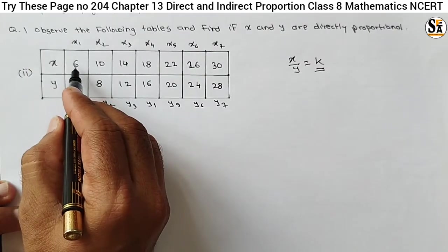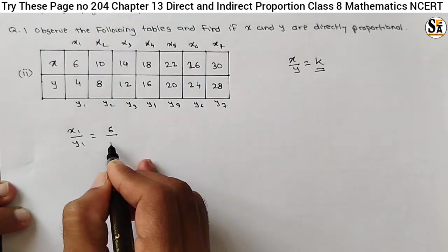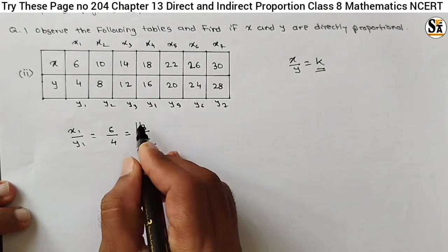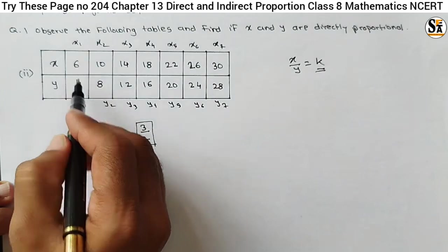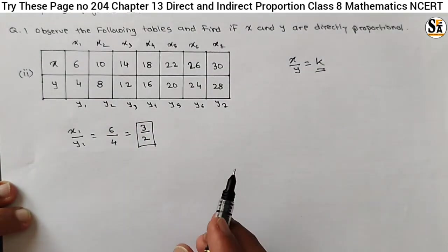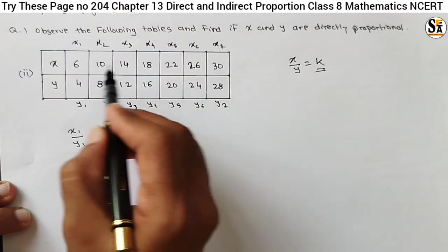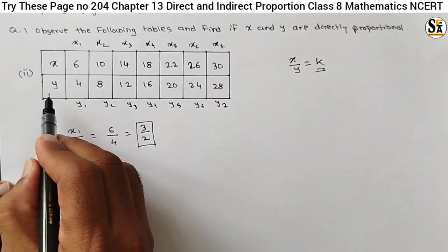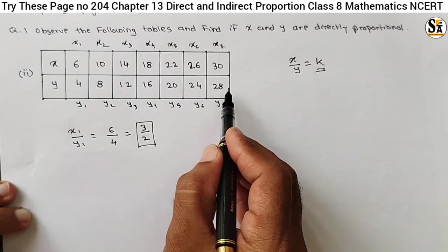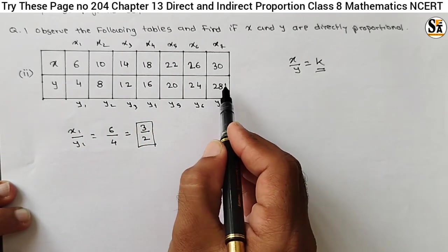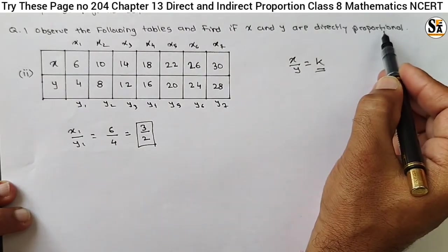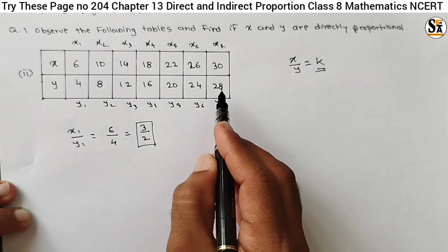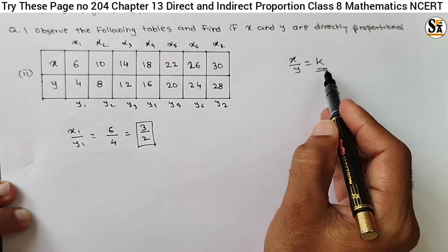x1 is given 6, so 6 upon y1 which is 4. What is the ratio? 3 upon 2. So 3 by 2 is the ratio for the first values of x and y. From the table, the value of x increases, and similarly the value of y also increases. But this is not the only condition for direct proportion — the values of x and y should increase or decrease in such a manner that their ratio must be constant.